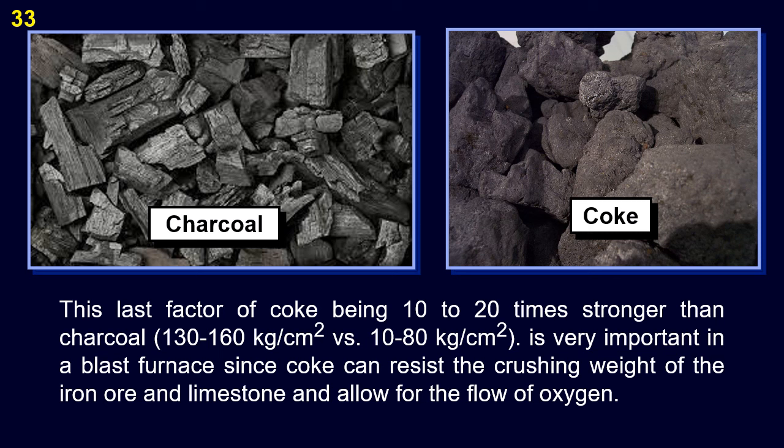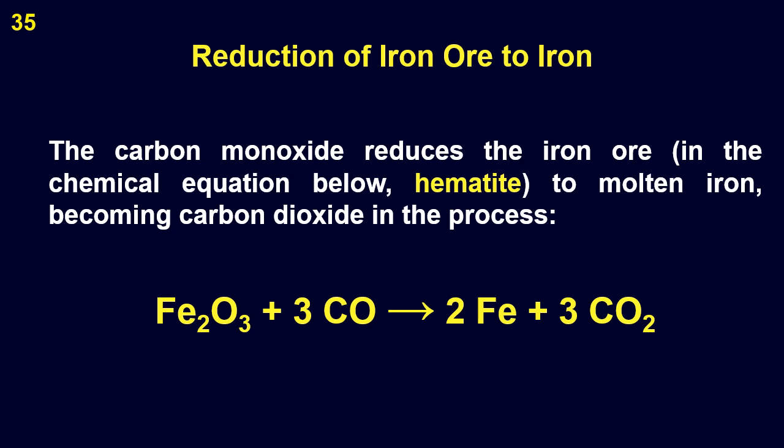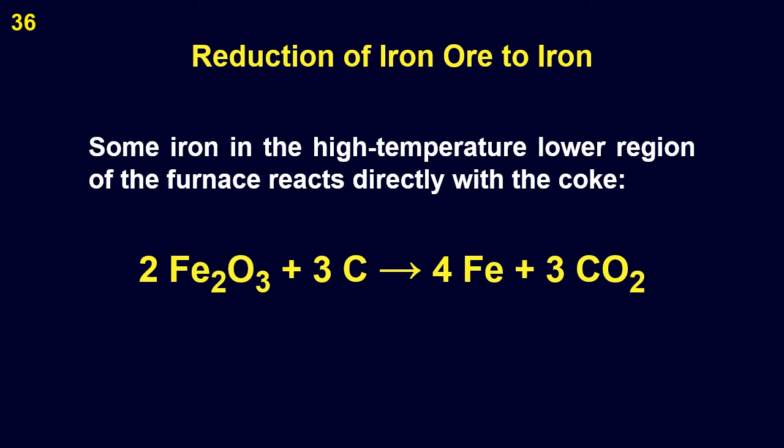In the furnace, the coke reacts with oxygen in the air blast to produce carbon monoxide: 2C + O₂ → 2CO. The carbon monoxide reduces the iron ore — in the chemical equation below it is hematite — to molten iron, becoming carbon dioxide in the process: Fe₂O₃ + 3CO → 2Fe + 3CO₂. Some iron in the high-temperature lower region of the furnace reacts directly with the coke: 2Fe₂O₃ + 3C → 4Fe + 3CO₂.